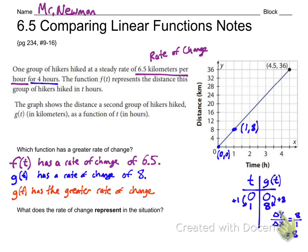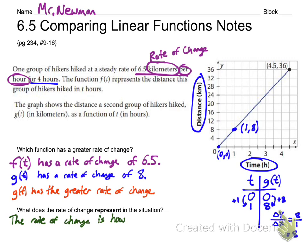What does the rate of change represent in this situation? Looking at the graph, it's distance in kilometers on the y-axis over time in hours on the x-axis — so it's kilometers per hour, which is speed. These numbers represent how fast the hikers are hiking. The first group is going 6.5 kilometers per hour; the second group is faster at 8 kilometers per hour.